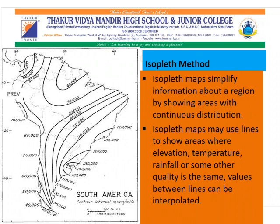Values between lines can be interpolated. In this map, when we can see the lines are closer to each other, the change in the variable is steep. And if the lines are away from each other, then it is gentle. We get an idea of the natural trend of the distribution of the variable with the help of this map.